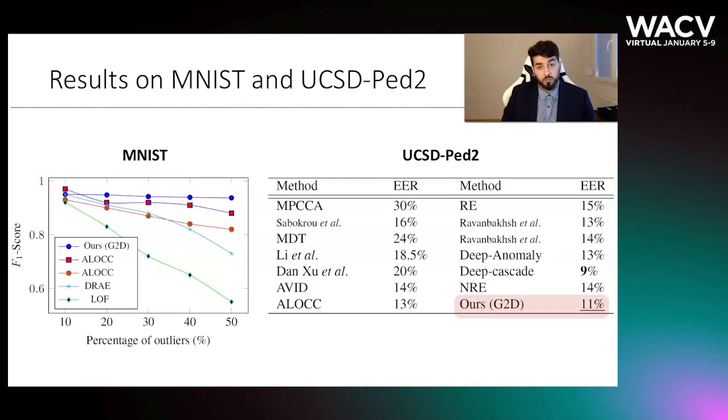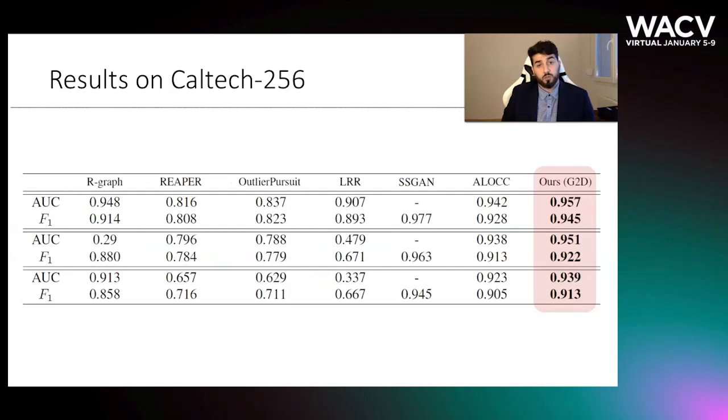We obtain also the second best result on the Pedestrian 2 dataset. The best result is obtained by a method denoted Deep Cascade. However, it is good to notice that unlike the other approaches that benefit from both spatial and temporal complex features, our proposed method operates only on 2D patches extracted from images. Finally, we tested our method on Caltech. The performance metrics of this experiment are F1 score and area under curve. The results listed in this table confirm that G2D performed at least as good as the other solutions, and outperforms them in many cases.